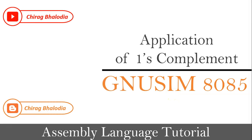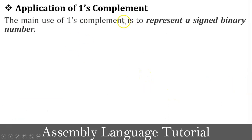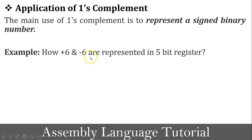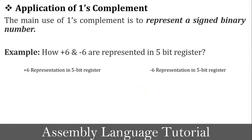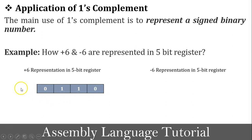The next topic is the application of one's complement. The main use of one's complement is to represent a signed binary number — that is, how to represent positive and negative numbers in the binary system. For example, how +6 and -6 are represented in a 5-bit register. First, 6 is converted into binary: 0110. The one's complement of this number is 1001.